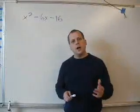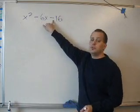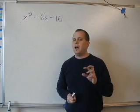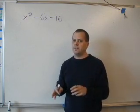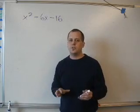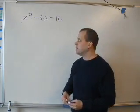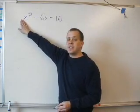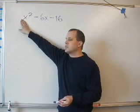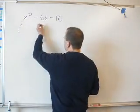Hi, and welcome back, Tigers. In this video, we're going to talk about what happens when we have two negatives. In the last video, we talked about a positive and a negative. Well, this time we have two negatives. This trick works 99% of the time. The first thing I need to say is: is there a 1 in front of x squared? Yes, there is. So I can do the shortcut. Watch how this works.